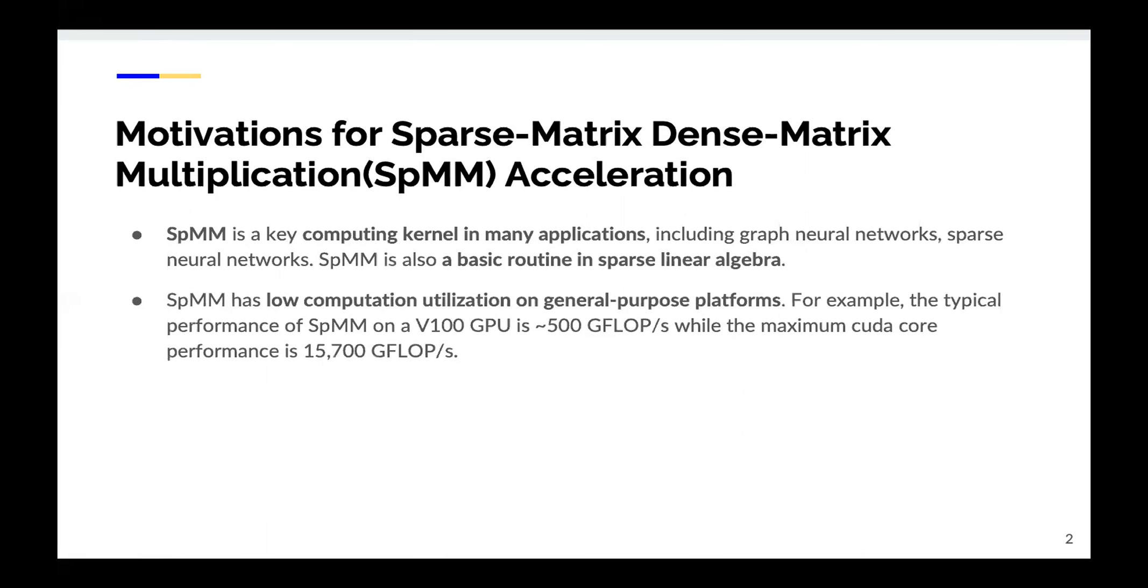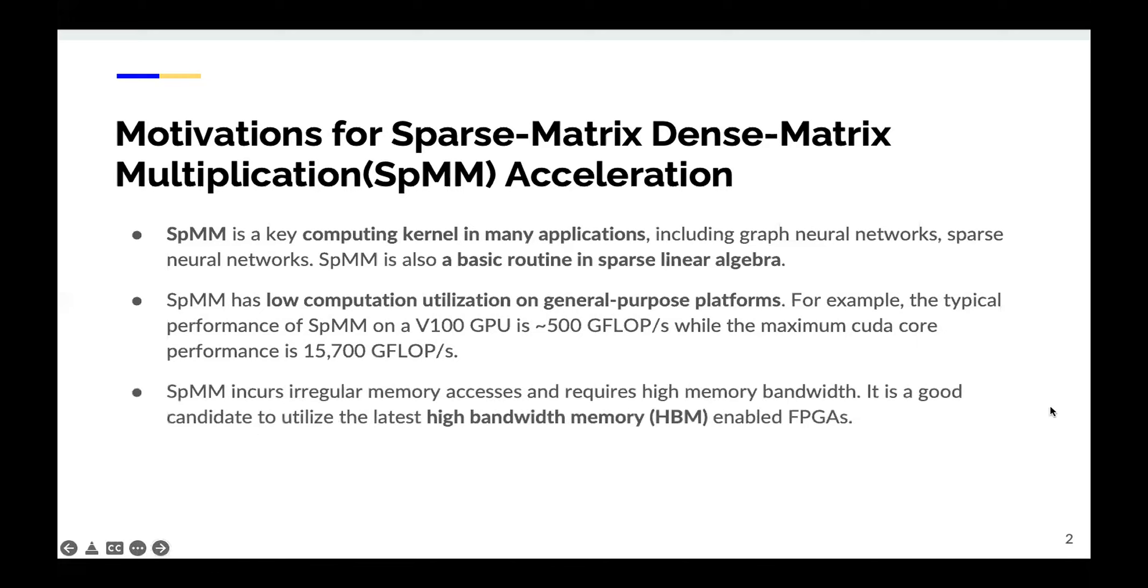Second, SpMM has low computation utilization on general purpose platforms. For example, the typical performance of SpMM on a V100 GPU is around 500 giga-flops, while the maximum CUDA core performance is more than 50,000 giga-flops. Third, SpMM incurs irregular memory access and requires high memory bandwidth. It is a good candidate to utilize the latest HBM-enabled FPGAs.